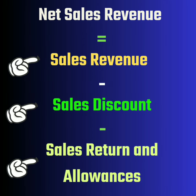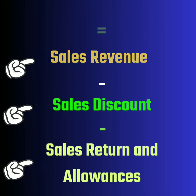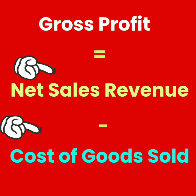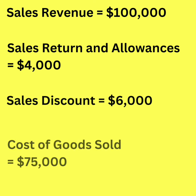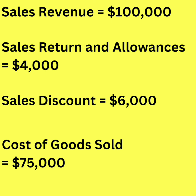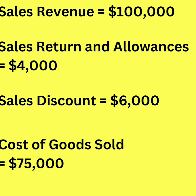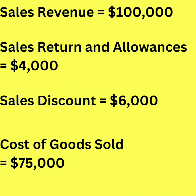minus sales returns and allowances, minus sales discount. Gross profit equals net sales revenue minus cost of goods sold. It is given that sales revenue is $100,000, sales returns and allowances $4,000, sales discount $6,000, and cost of goods sold $75,000.